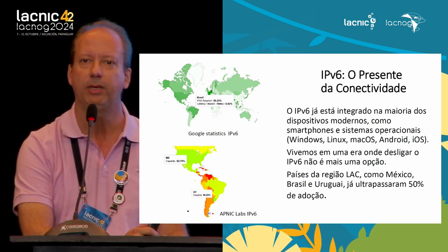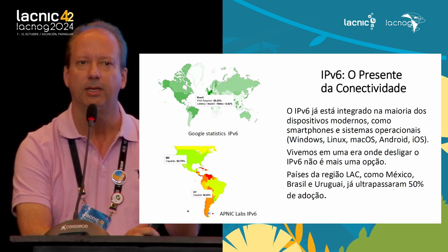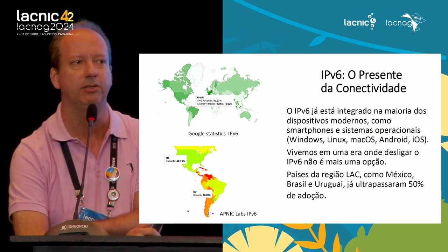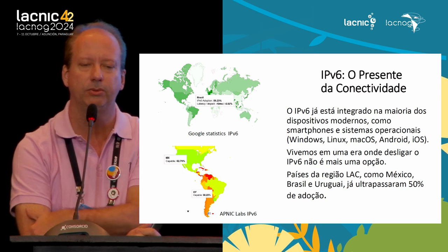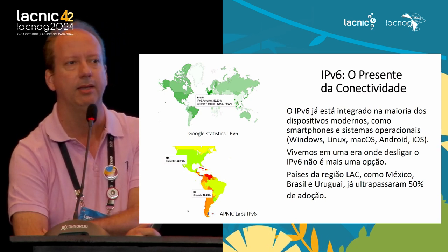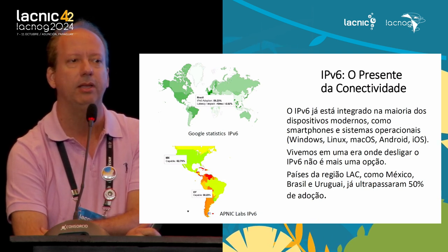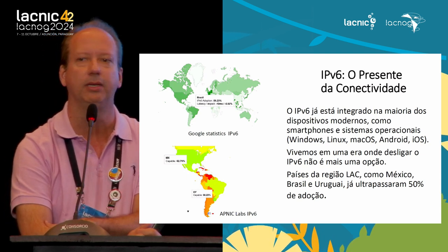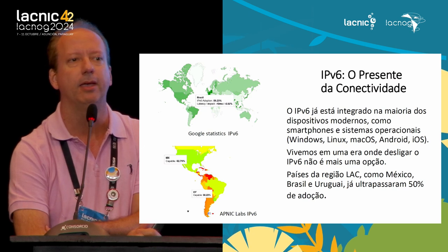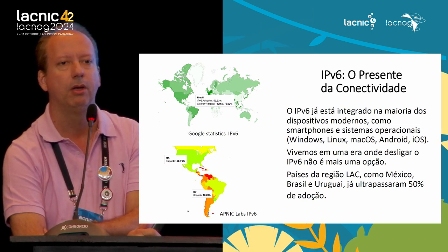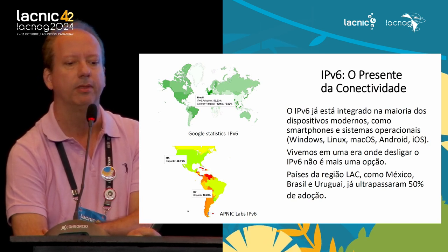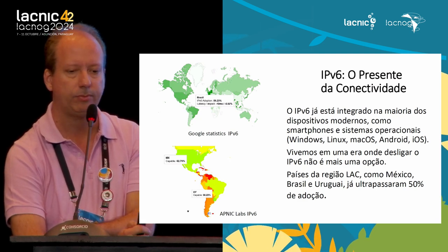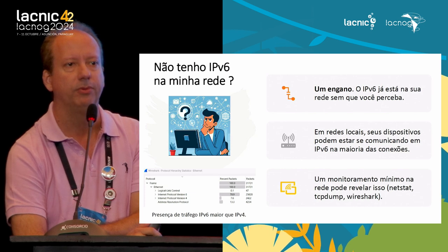The previous presentations before the coffee break were quite useful to understand that IPv6 is here in all the devices of the event, and it is present in most operating systems and in IoT devices. Today, in this era, we can no longer disable or turn IPv6 off in a network — it's not an option. Countries in our LACNIC region have already surpassed the 50% milestone; Brazil, Uruguay, and Mexico have already surpassed that, based on Google and APNIC Labs statistics.